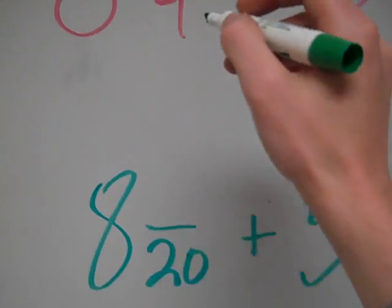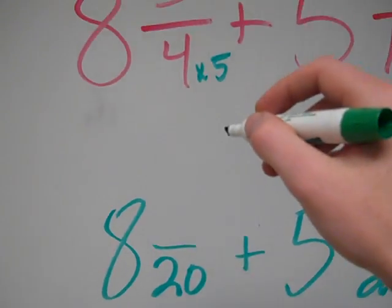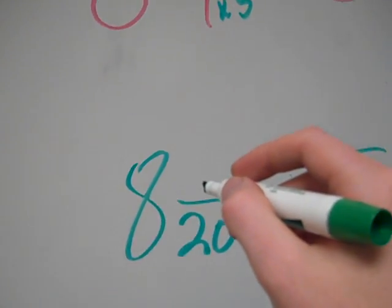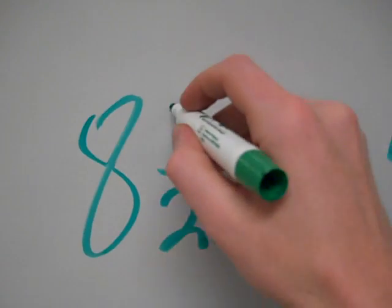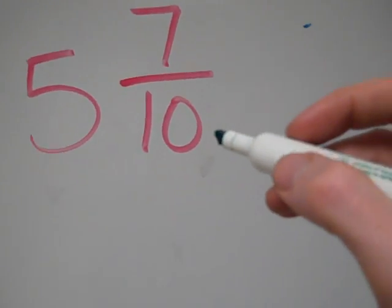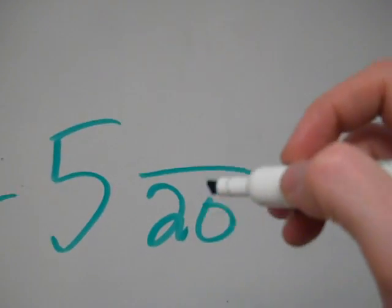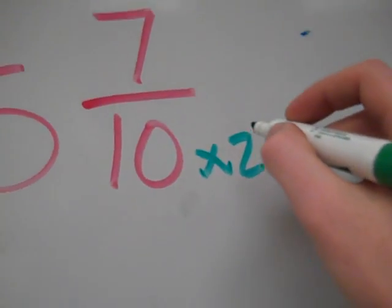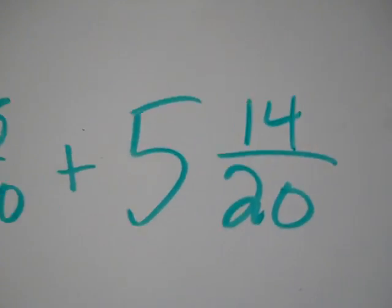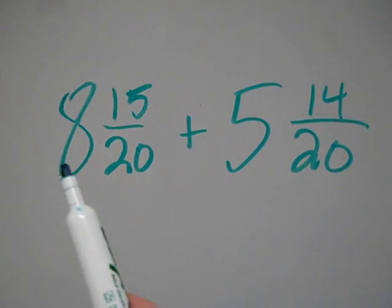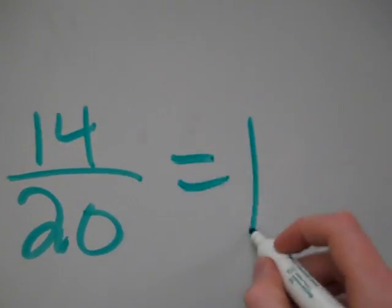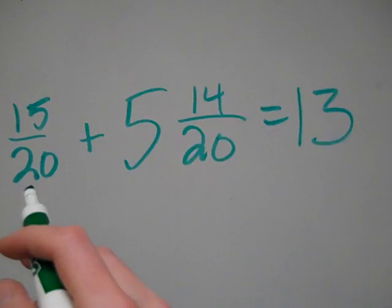So anyway, 4 times 5 is 20. So I'm going to do 3 times 5. And then that's 15/20. Here I have 10 times 2 is 20, so 7 times 2 is 14. So that's 14/20. I'm going to add my whole numbers. 8 and 5 is 13.